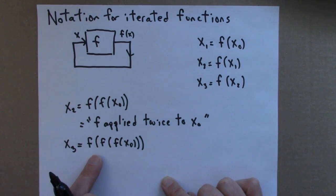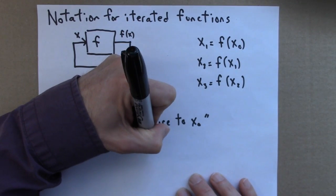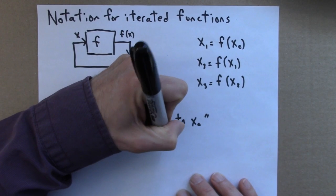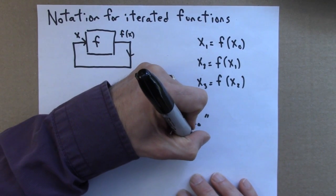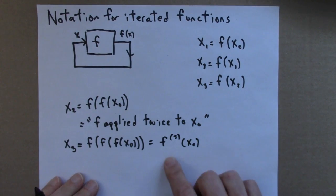Writing all these f's in a row is a little bit cumbersome. So there's a shorthand notation for this. So this, f with a 3 in the parenthesis, is understood to mean f done three times. So this is x0 after f has acted on it three times.